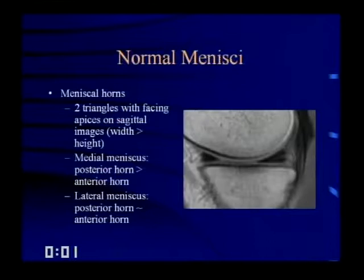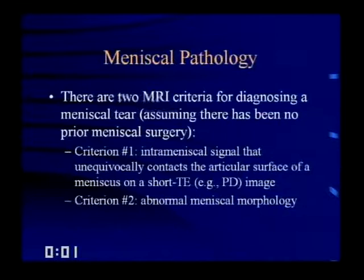There are two MRI criteria for diagnosing a meniscal tear, assuming there's been no prior meniscal surgery. Criteria number one is intrameniscal signal that unequivocally contacts the articular surface of a meniscus on a short TE image — for example, a proton density-weighted image. Criteria number two is abnormal meniscal morphology.